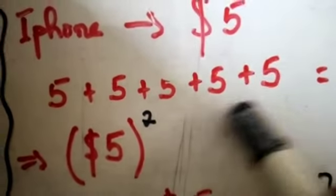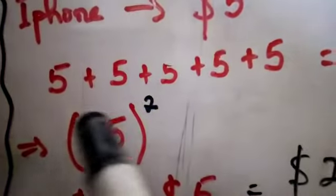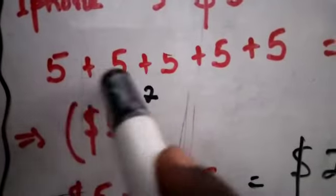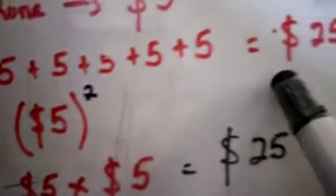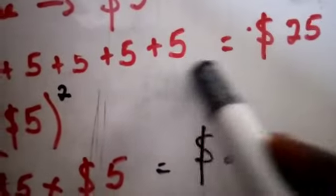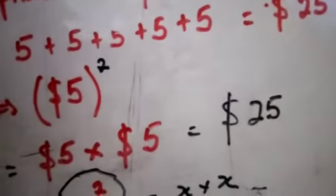So you are going to buy one, two, three, four, five, right? So in all we are spending $25 for five pieces of iPhone.